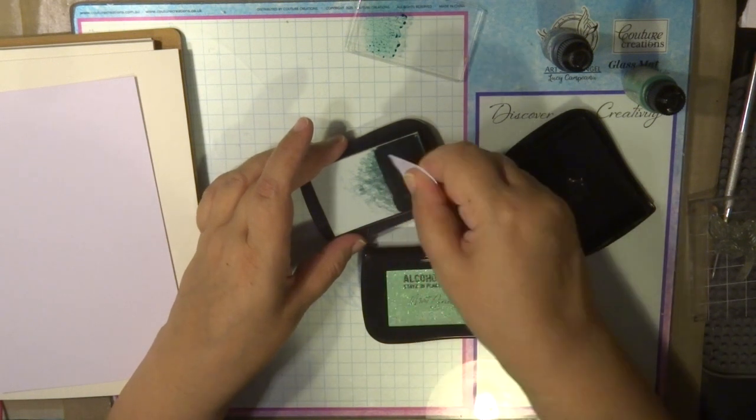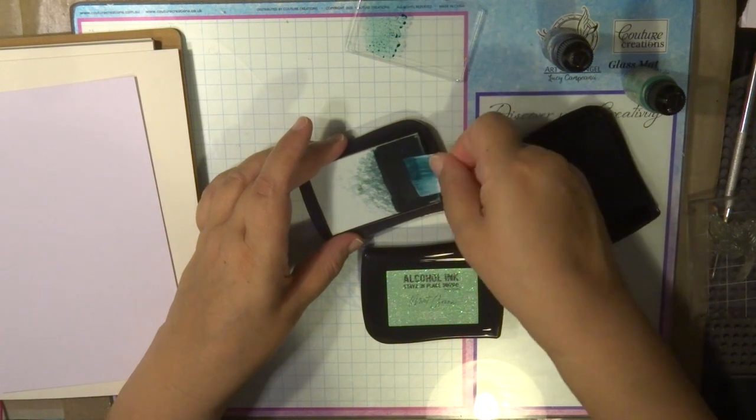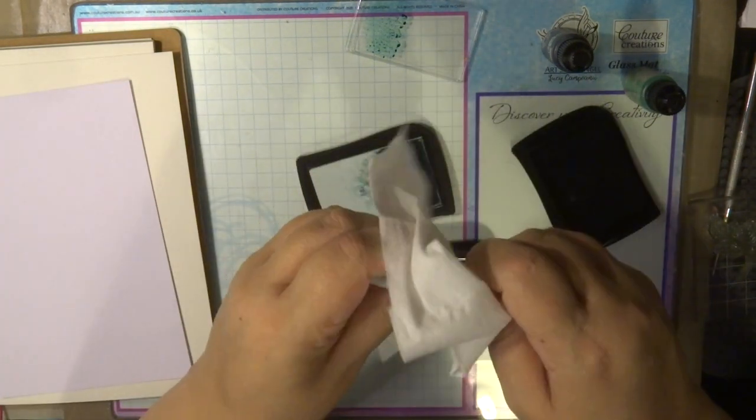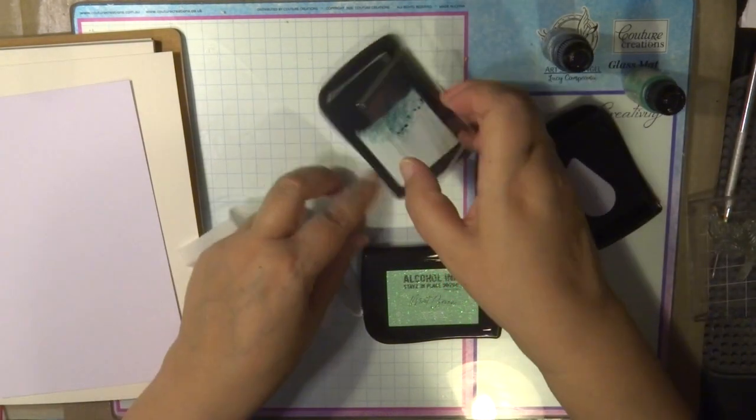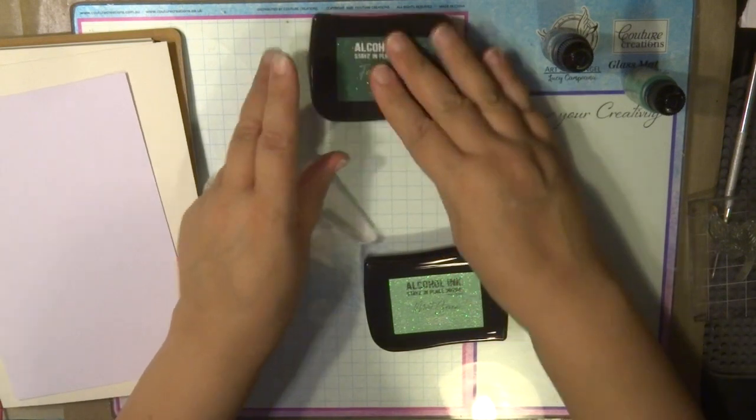Then you just get a baby wipe to clean that spatula because you're going to keep this for next time. I usually attach it with some double-sided tape on the top of the lid. It comes with a clear lid to keep it nice and moist, so that's ready to go for stamping.